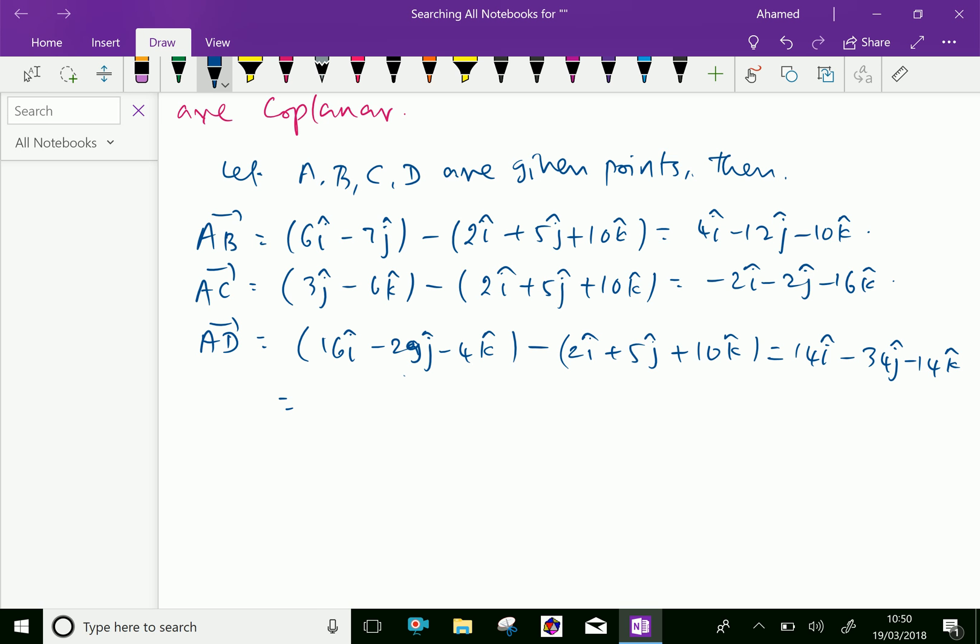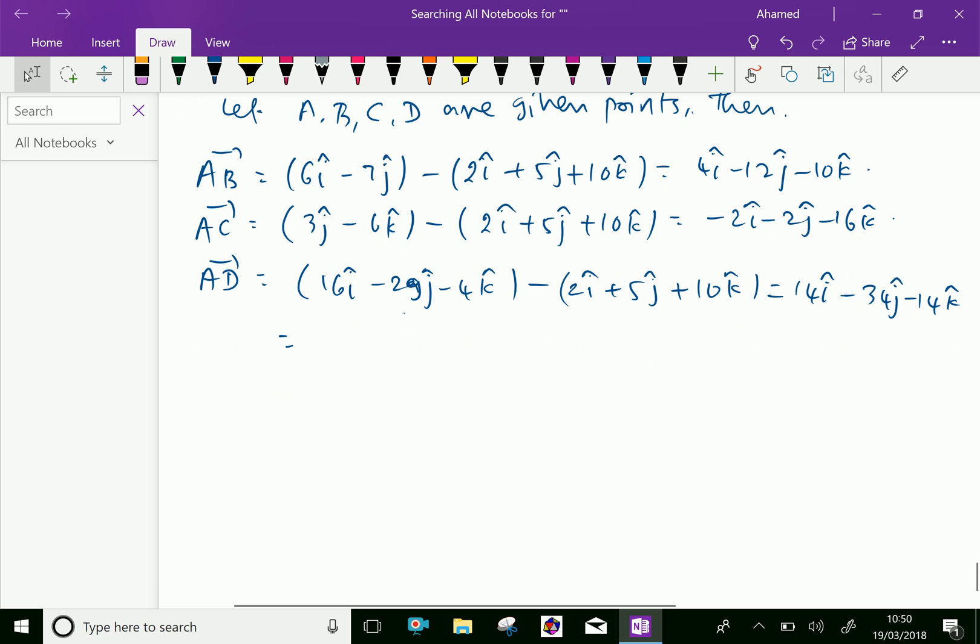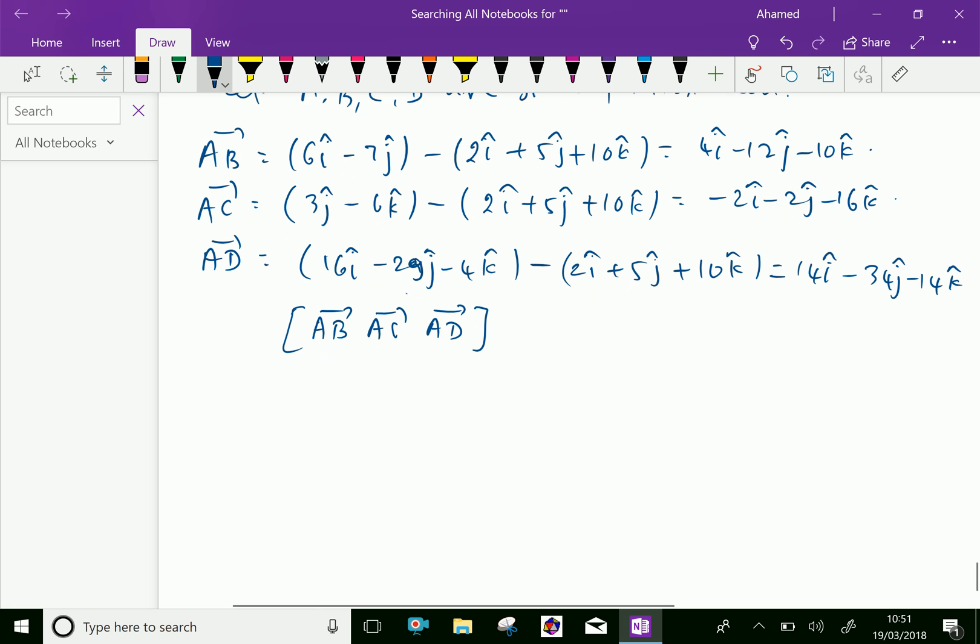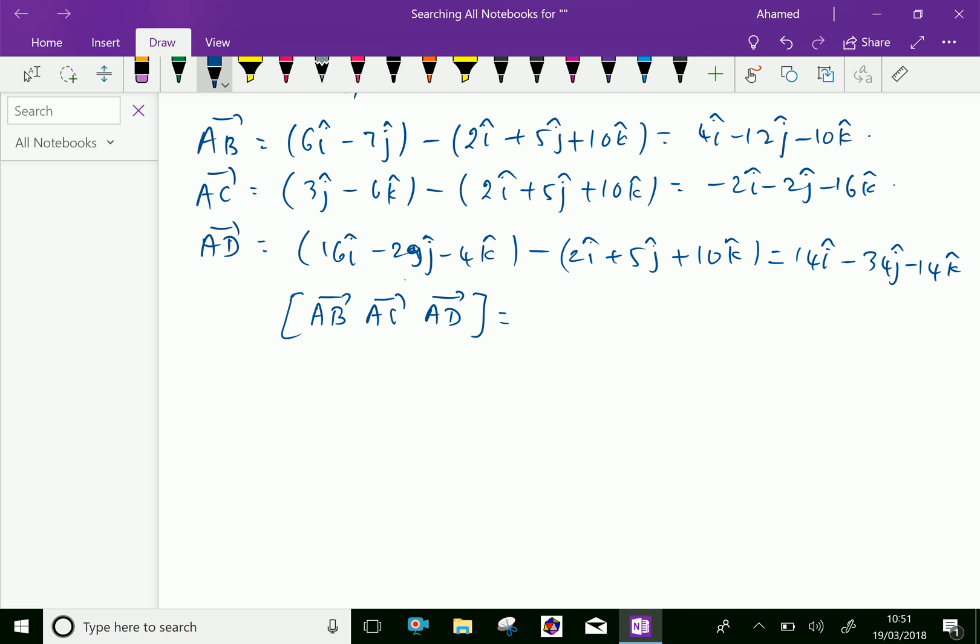We got three vectors now. Now we will find the scalar product of those three vectors. We can write vector AB, vector AC, vector AD, which is equal to the determinant value.